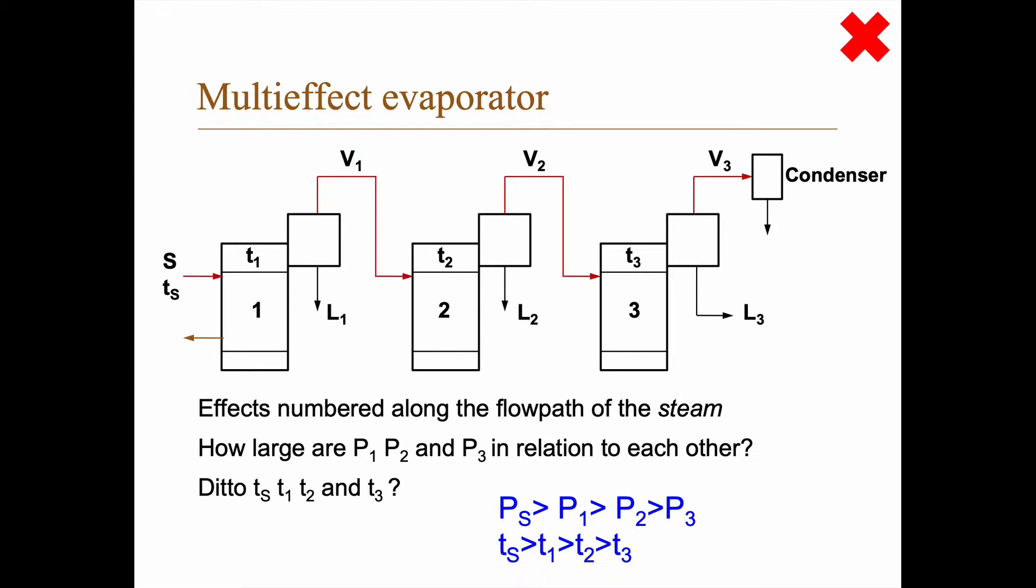Well, if you first look at the steam economy, if you have this three-effect evaporator, the best thing we can get here for the first one is that s equals v1, right? That's our rule of thumb, that if we use one kilogram of fresh steam we might produce one kilogram of v. But if we have one kilogram of v1 here, the best solution here is to produce one kilogram of v2. But then v2 can be used to produce one kilogram of v3. So if you take the sum of the vapor produced here, that's three times as large as s.